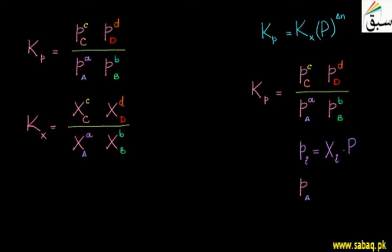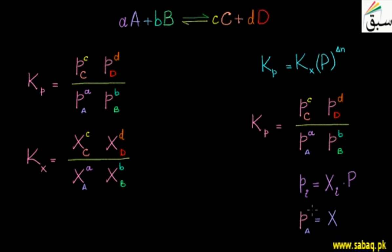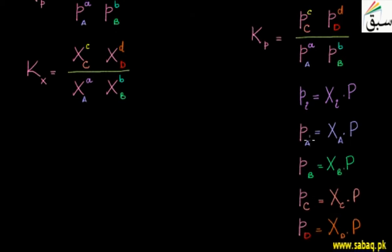Now, if we write this for constituent A specifically — the partial pressure of A equals mole fraction of A into total pressure. Similarly, we write expressions for B, C, and D. So for each of A, B, C, and D, we write their partial pressures as their respective mole fractions multiplied by total pressure P. The total pressure is the same for all constituents since they are all in the same system, represented by capital P.